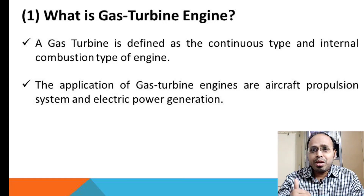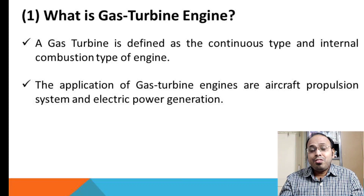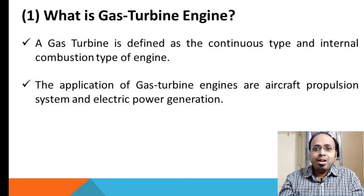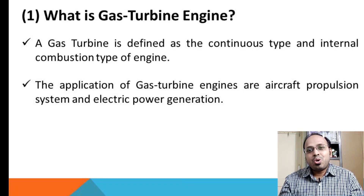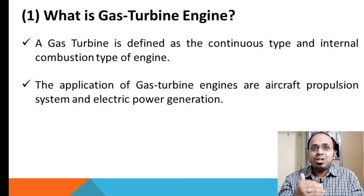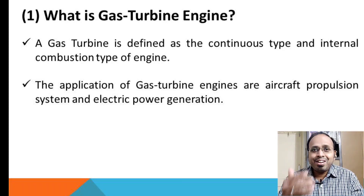The gas turbine engine is called a continuous type engine because the flow inside is continuous and not stopped anywhere. It is called an internal combustion type of engine because the combustion process happens internally. The applications of the gas turbine engine include aircraft propulsion systems and electrical power generation.